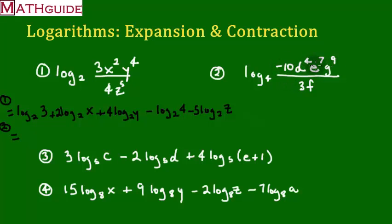So anything that's in the numerator will go out in front. And each one of those is going to get its own log, so I'm going to put log base 4 of negative 10. Remember, the power is going to go out in front. Log base 4 of E. The 7 is going to go out in front. Log base 4 of G. 9 is going to go out in front. I'm going to put a log base 4 of 3. I'm also going to put a log base 4 of F. So I wrote them all in front.